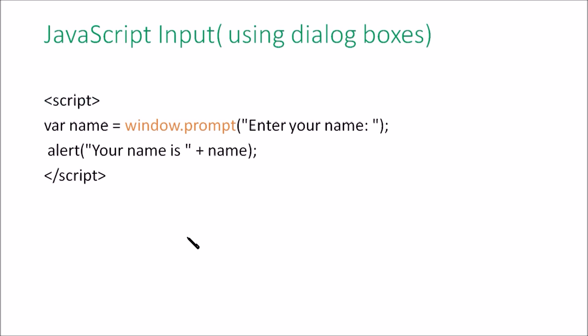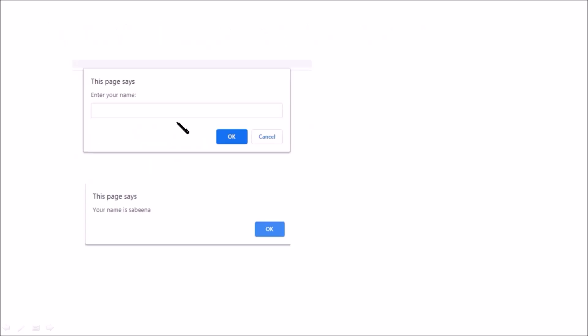The next is how you can read input. One of the methods is using the prompt dialog box. We use the function window.prompt with a message like 'enter your name', then a prompt dialog box will appear and you can type your name there. In the alert box, that name will then be printed. This is the output when you run the same program.